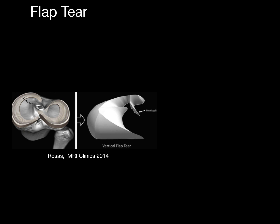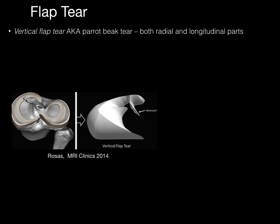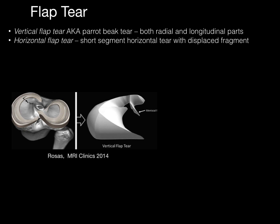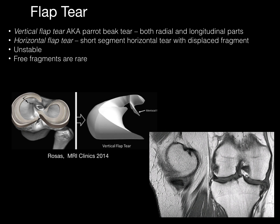Another type of tear is a flap tear. A vertical flap tear, otherwise known as a parrot beak tear, contains a radial portion that turns into a longitudinal part. The horizontal flap tear has a short segment of horizontal tear that is displaced — these are unstable and free fragments are not that common. Here's an example of a horizontal flap tear flipped into the medial gutter.